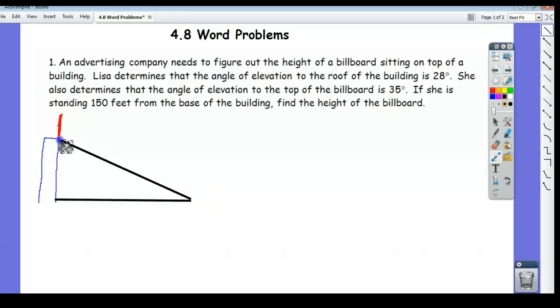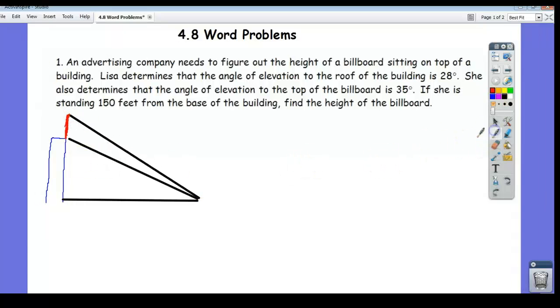Angle of elevation to the roof is 28 degrees, and the angle of elevation to the top of the billboard is 35 degrees. So there's two different angles that we're looking at here. One is to the top of the billboard itself, and one is just to the top of the roof. So the one to the top of the roof is 28 degrees. That's what it says here. So I'm going to label that 28 degrees.